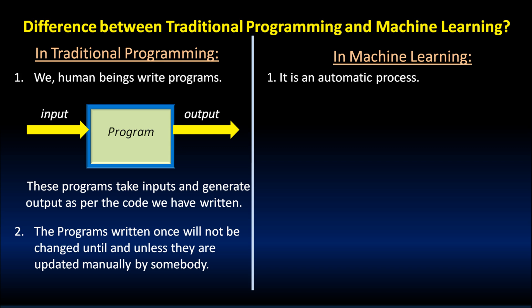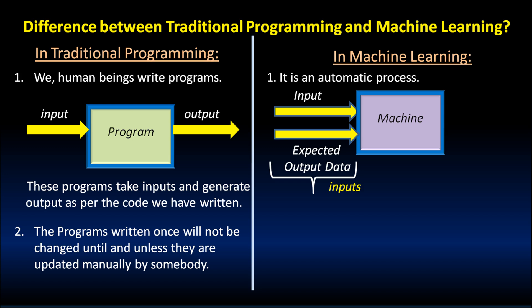Whereas machine learning is an automatic process. We give it the input and also the expected output data.